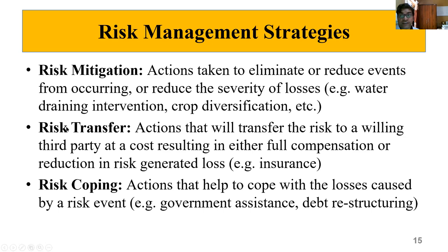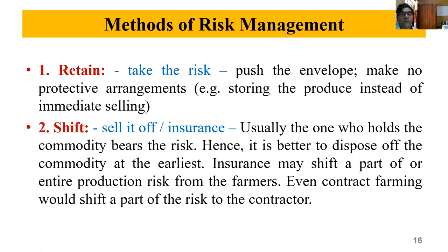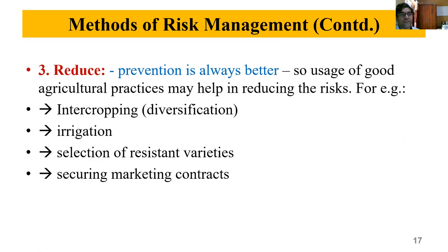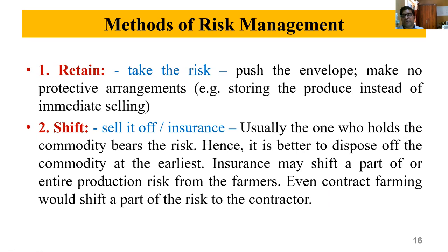So we have risk mitigation strategies, risk transfer strategies — transferring your risk to a third party who is willing to take it, like insurance — and risk coping mechanisms. Due to some risk event beyond the control of farmers, assistance can be provided by public agencies so that farmers can cope with the risk. Now, what are the methods of risk management? There are five methods: first is retain, second is shift, third is reduce, fourth is self-insure, and fifth is avoid.